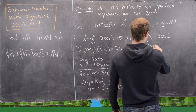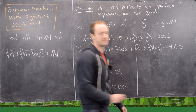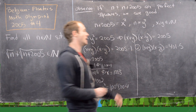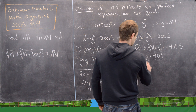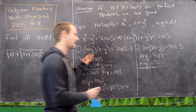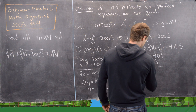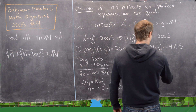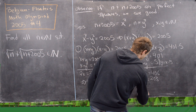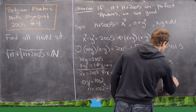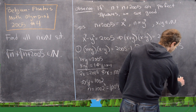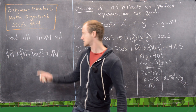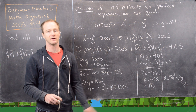Another factorization of 2005 is (x + y)(x - y) = 401 × 5. In fact 401 and 5 are both prime, so this exhausts all factorizations. Setting x + y = 401 and x - y = 5, adding gives 2x = 406, so x = 203. Then y = x - 5 = 198, which gives n = 198² = 39,204.